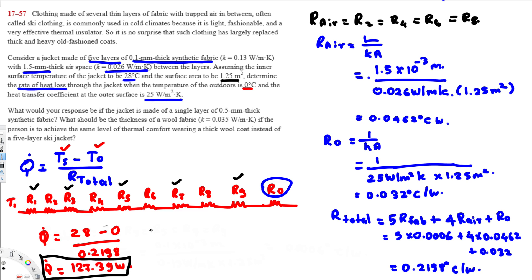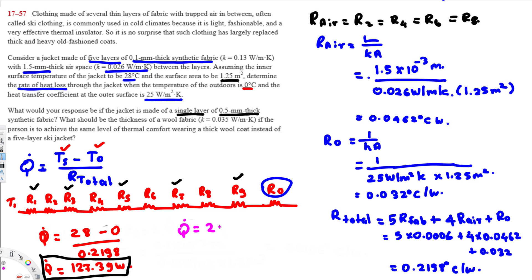For Part 2: what if the jacket is made of a single layer of 0.5 mm thick synthetic fabric with no air layers? There's only one layer and no trapped air. We use the same Q̇ equation, but R_total will change.